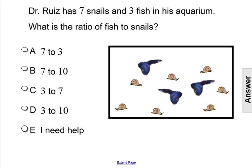Dr. Ruiz has seven snails and three fish in his aquarium. What is the ratio of fish to snails? This is an example of a part-to-part ratio, where we're comparing the fish and snails in the aquarium. First, let's count the fish: one, two, three fish in the aquarium.